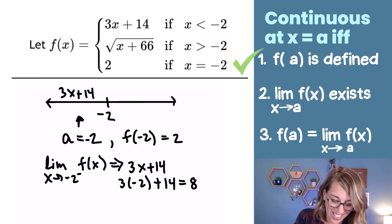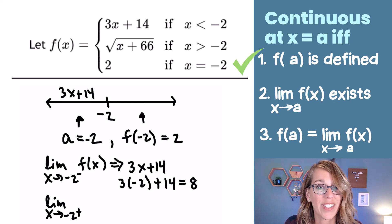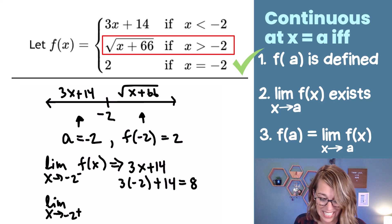On the right-hand side, so the limit as x approaches negative 2 from the right, from the right of negative 2, I'm going to be on this side, greater than negative 2. And I'm using that other formula in my piecewise function, radical x plus 66.